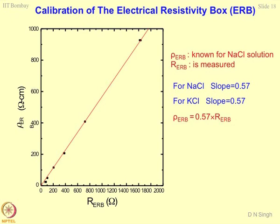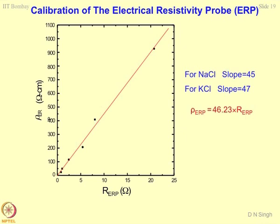Once calibration is done, you can proceed with geomaterial characterization. Fill the box with the geomaterial of interest — what you are measuring is resistance between the two electrodes multiplied by the calibration factor, and you get the resistivity of the material. Similarly for the probe, if you measure the resistance across the two copper rings and multiply by this factor, it gives you the resistivity.